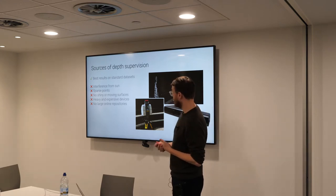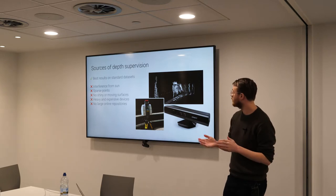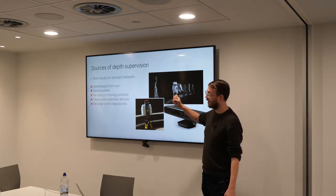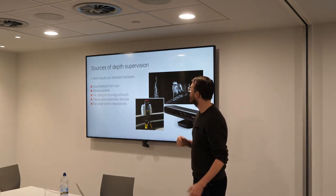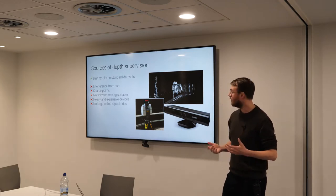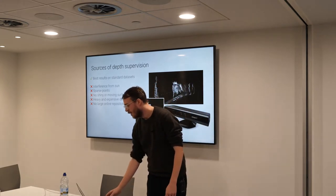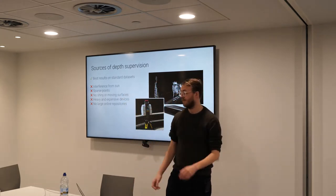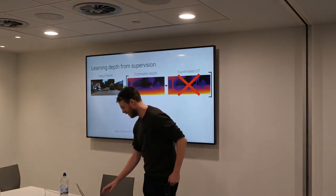These sensors have limitations in the kinds of scenes you can actually image. If you start going into outdoor scenarios, you have interference from the sun. Some of these sensors only give sparse depth back, as opposed to really dense depth for every pixel. Shiny and moving surfaces are going to be problematic, and they're also heavy and expensive. Crucially for the computer vision community, there are no huge online repositories of this kind of data available.